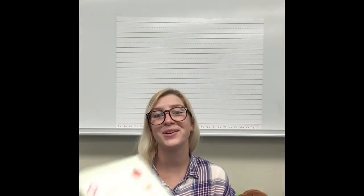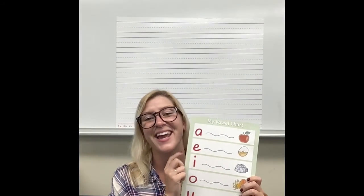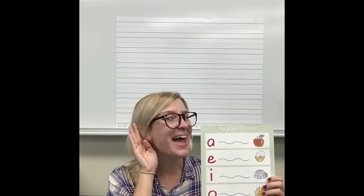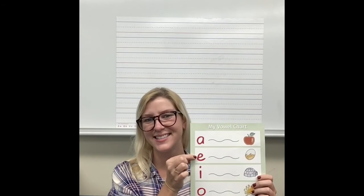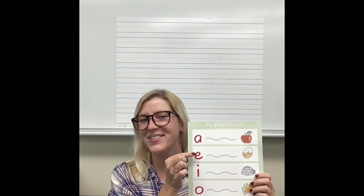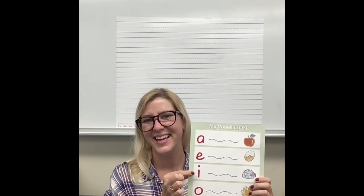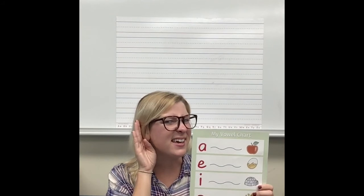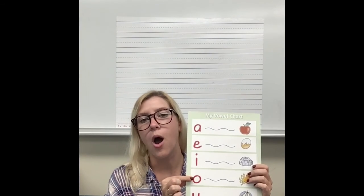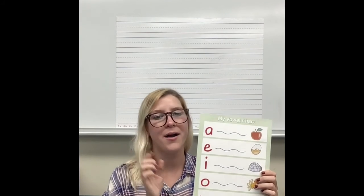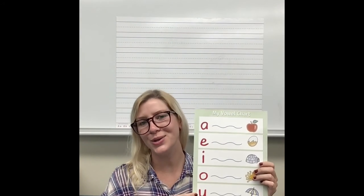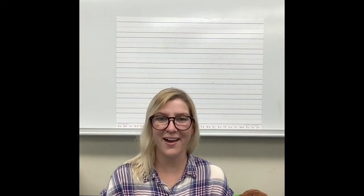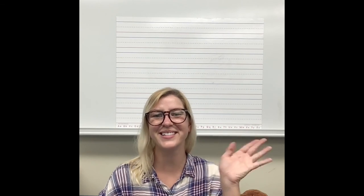Before we say goodbye, let's review our vowel names and sounds. Name is A, sound is A. Name is E, sound is E. Name is I, sound is I. Name is O, sound is O. Name is U, sound is U. And all of the other letters are consonants. Bye, readers and writers!